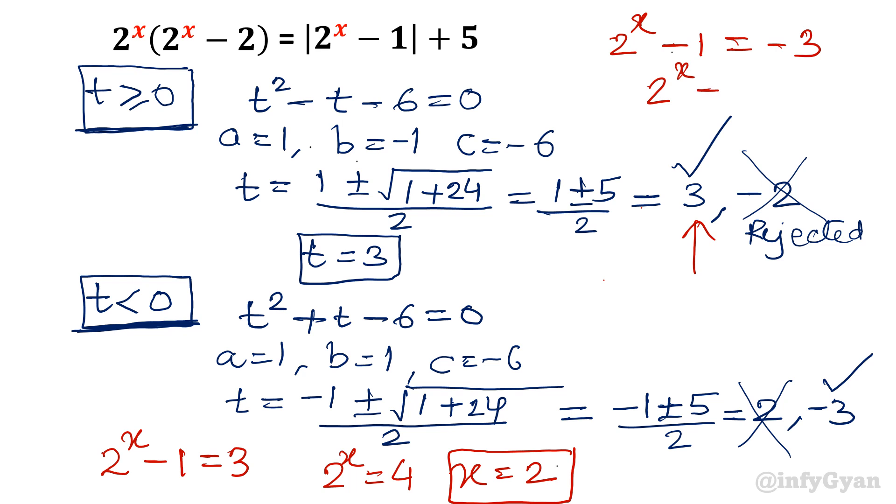Second one is 2 raised to the power x minus 1 is equal to minus 3. 2 raised to the power x is equal to negative 2, which is not possible. It is always positive. So we will reject that solution. So only solution is x is equal to 2.